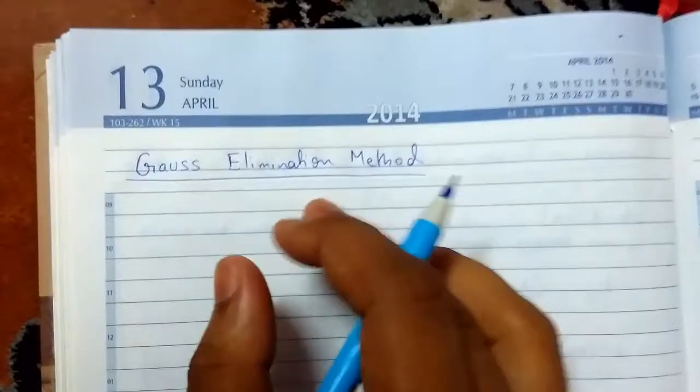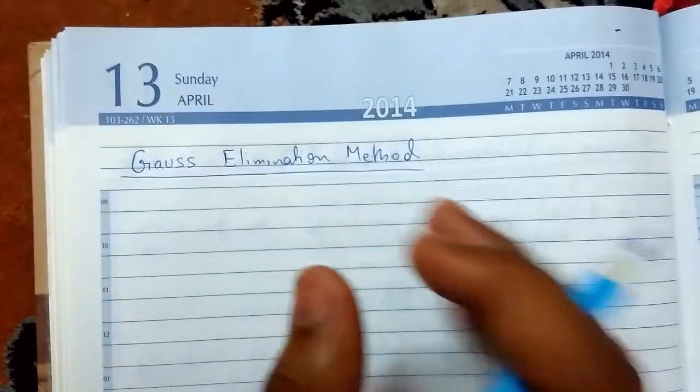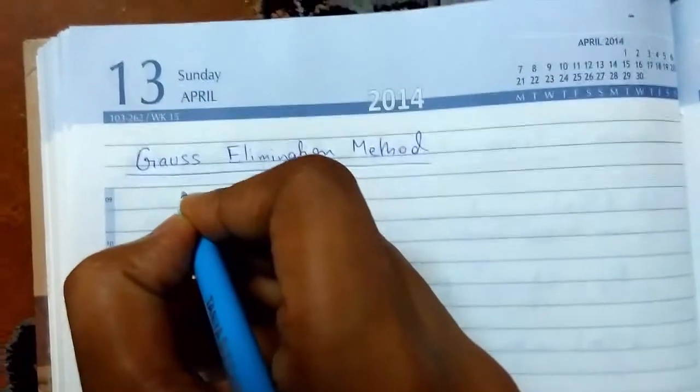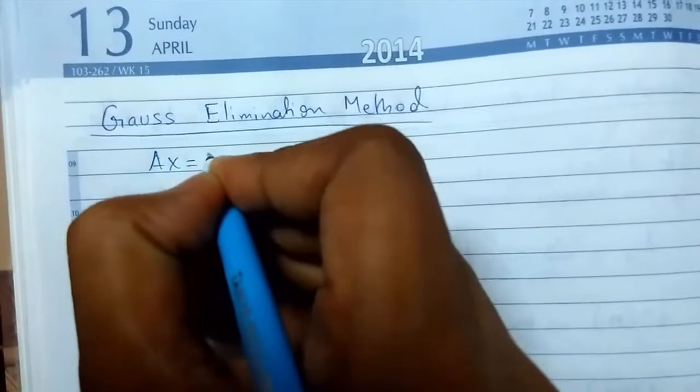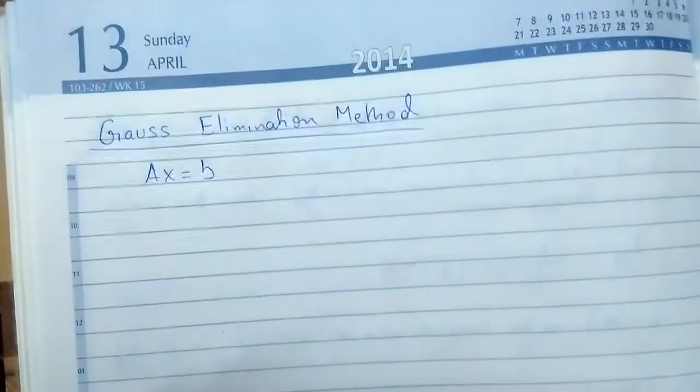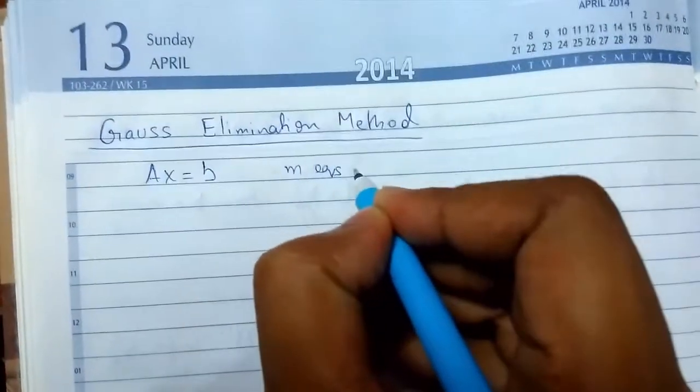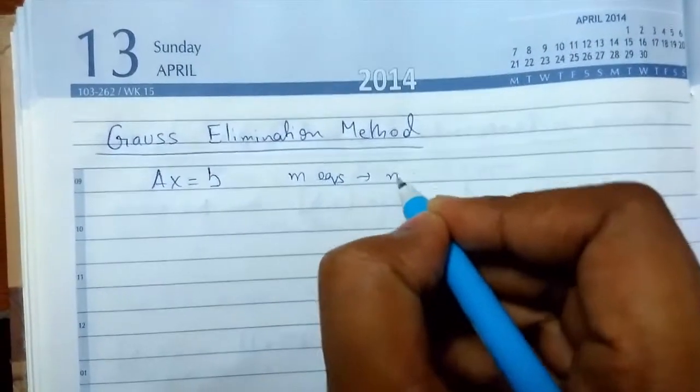This Gaussian elimination method is a method of solving linear system equations, system of equations that is ax equals to b, consisting of m equations where there are n unknowns.